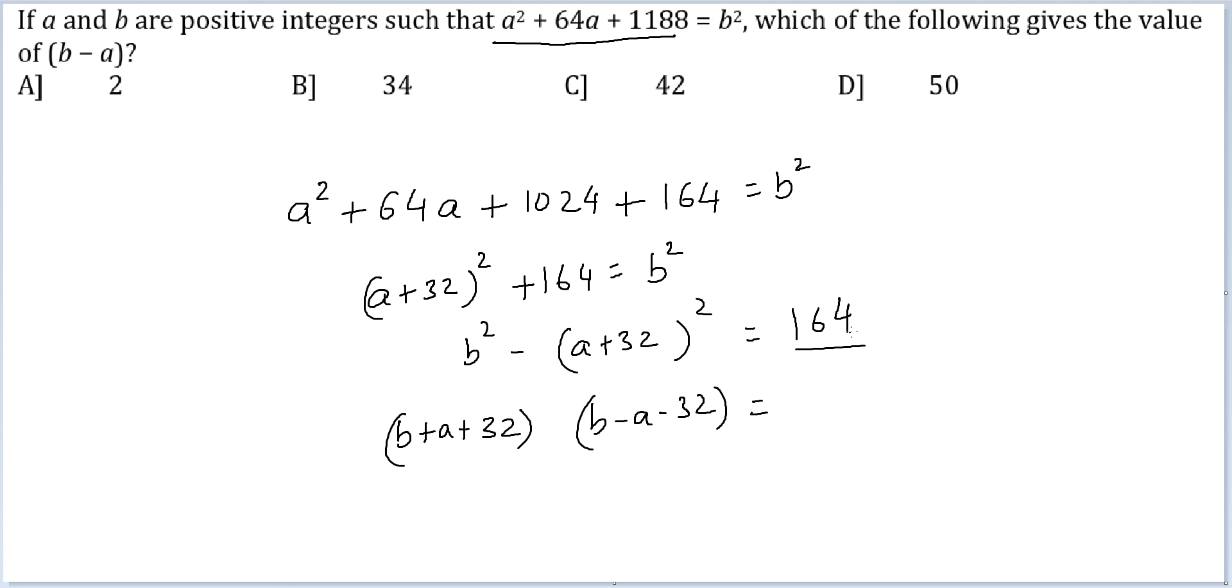So how can you write 164 as product of two even numbers? It can only be done in one way: 2 into 82.